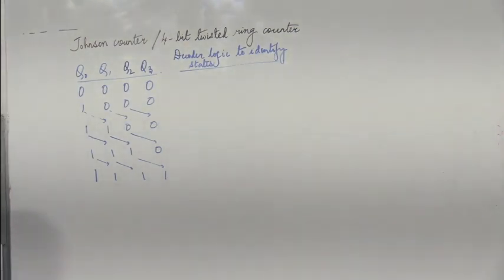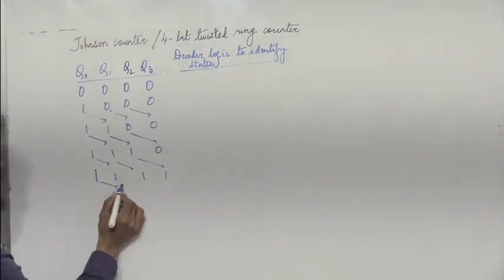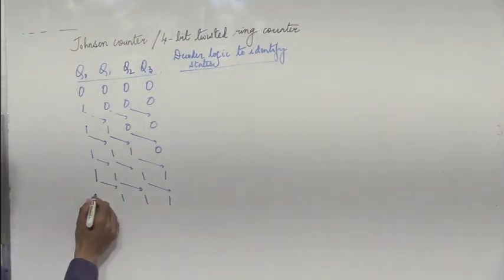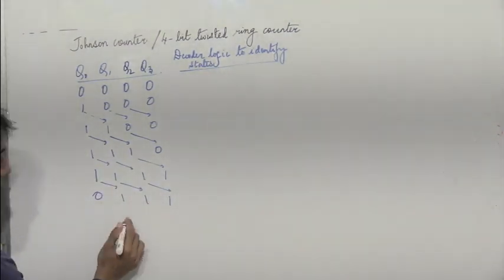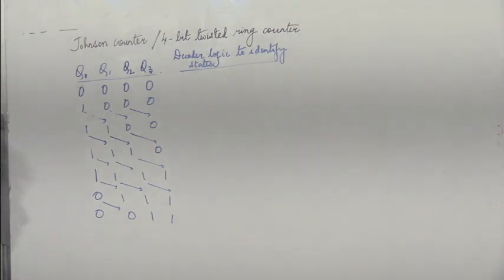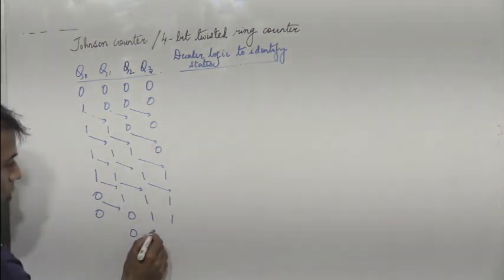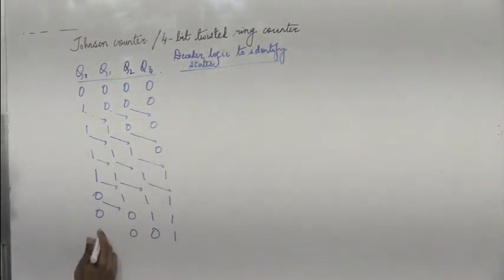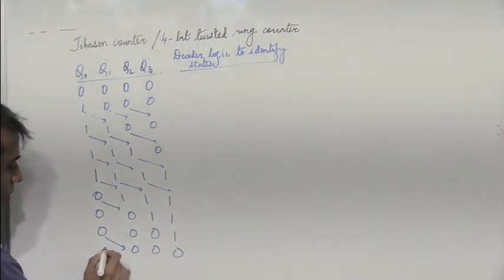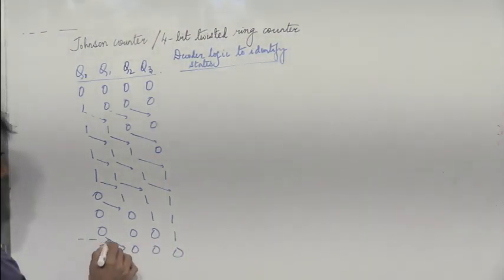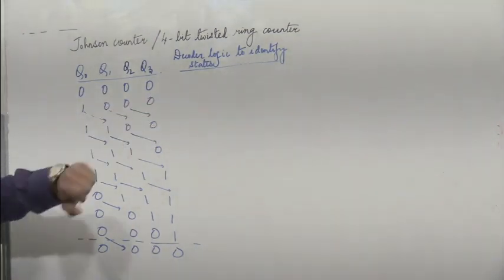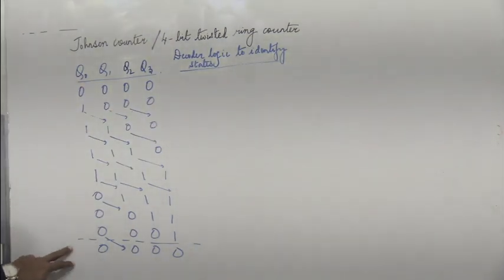And this continues. This 1 gets shifted here. What about q0? It's the complement of q3 which is 0. And again I have 0, 1, 1 — complement of q3 which is 0. Then I have 0, 0, 1 — complement of q3 which is 0. And then 0, 0, 0, 1 — complement of q3 which is 0. So the sequence repeats: 0, 0, 0, 0 then 1, 0, 0, 0 and so on.